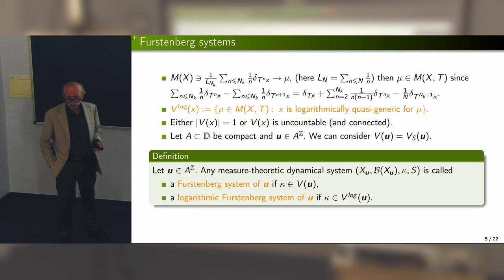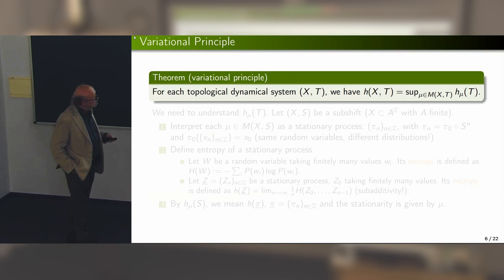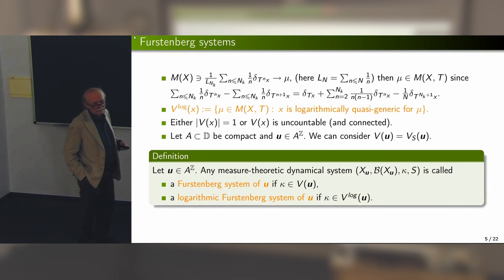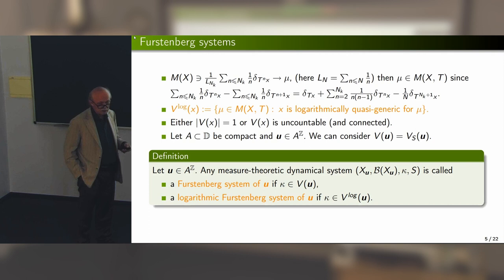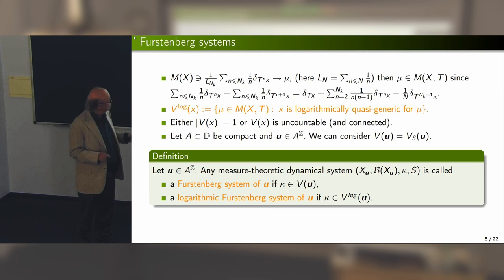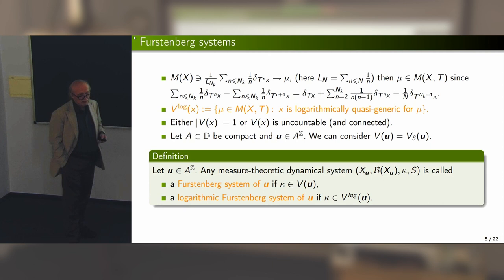There is an audience question about the definition: u is an element of the shift space, X_u is the orbit closure — a subset of A to the Z — and the visible measures V(u) are measures on X_u. So what is V(x)? These are all measures visible from the point x, as measures on the space X_u, which is a subset of A to the Z. The theoretical dynamical system is (X_u, S).